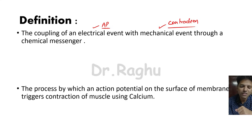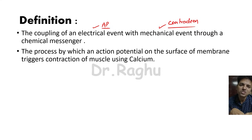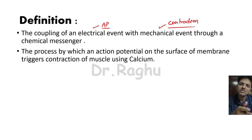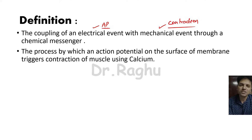In another way, I can define it as a process by which an action potential generated on the surface of the membrane is going to trigger the contraction of the muscle using calcium. Remember that excitation-contraction coupling is neither neuromuscular transmission nor the process of muscle contraction. It is a process which is occurring in between these two processes — it is coupling them.